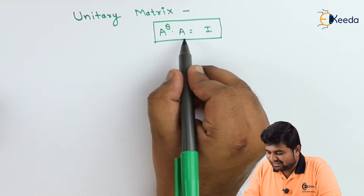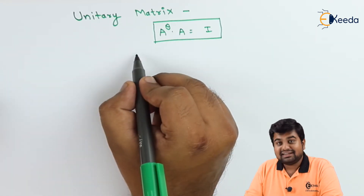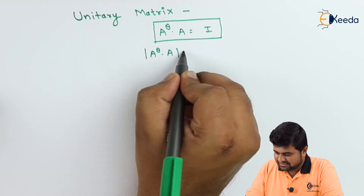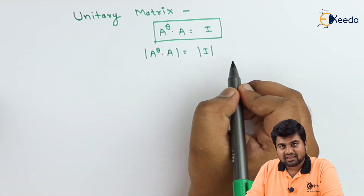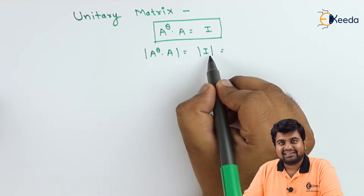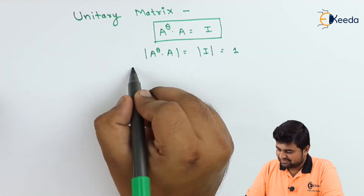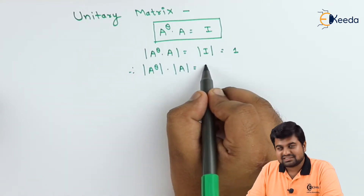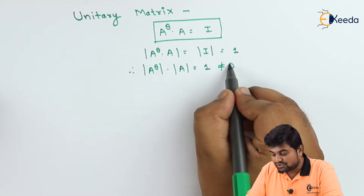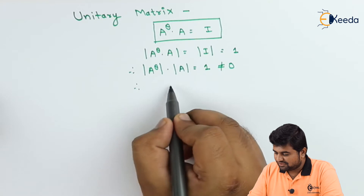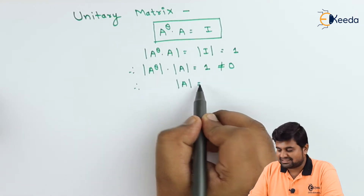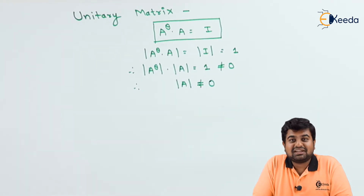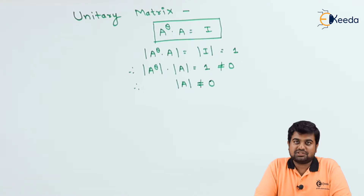If A-theta into A equals I, let us take the determinant of both sides. The mod of A-theta into A equals the mod of I, and we know the determinant of the identity matrix is 1. Therefore, mod of A-theta times mod of A equals 1, which is not equal to zero. This is very important — the determinant of matrix A must not be zero.